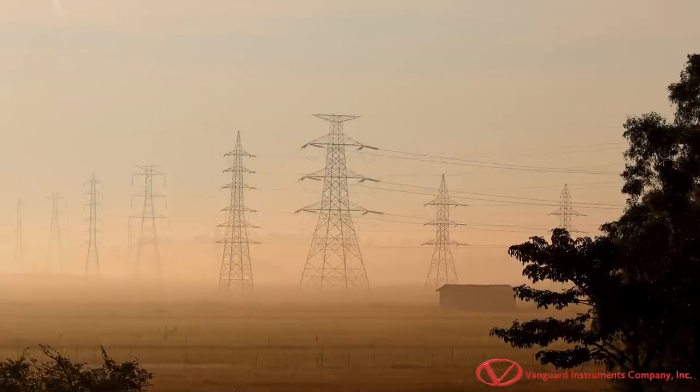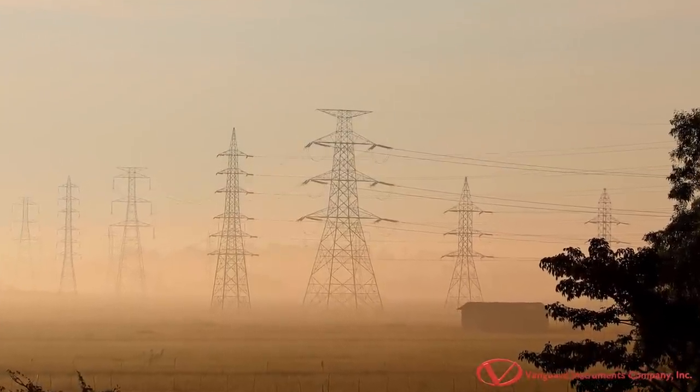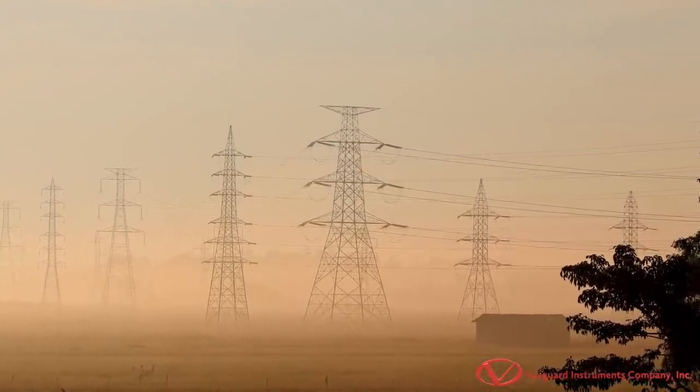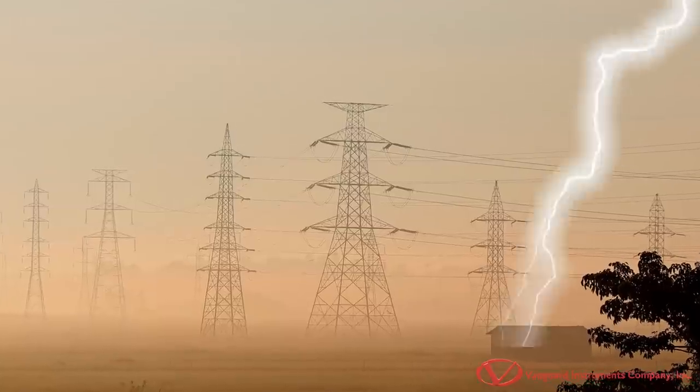During abnormal conditions such as when lightning strikes a transmission tower, circuit breakers isolate the faulty components of the system to prevent additional damage.